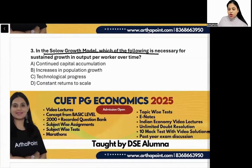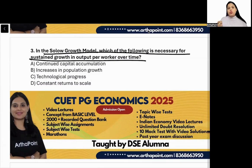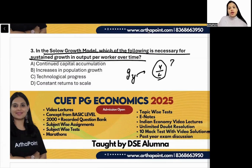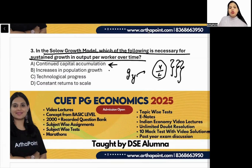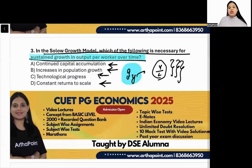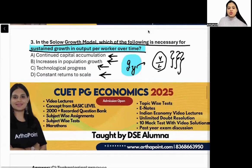Next question: in the Solow growth model, which of the following is necessary for sustained growth in output per worker over time? If we want the growth of small y — output per worker — what must happen? The options are: continued capital accumulation, increased population growth, technological progress, or constant returns to scale. What is required for growth in output per worker?